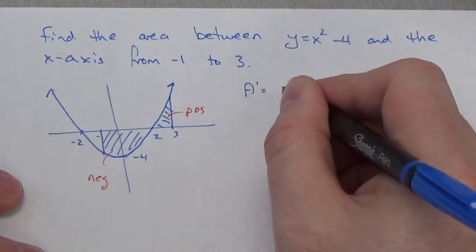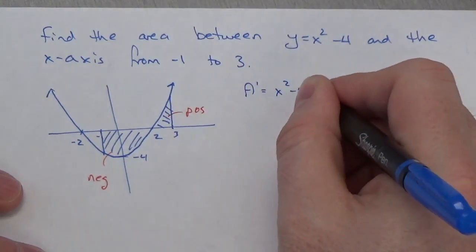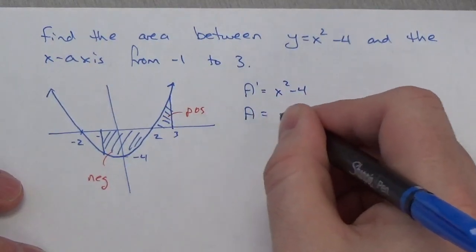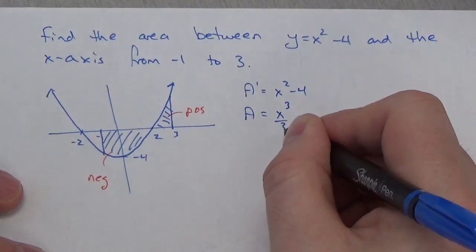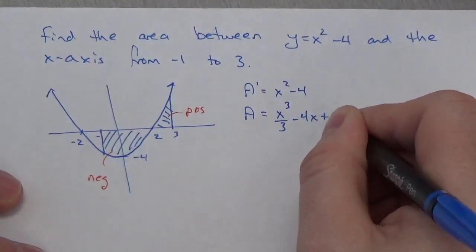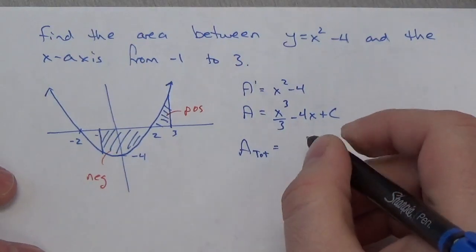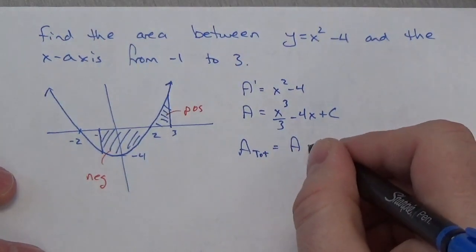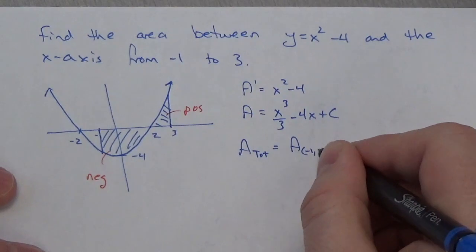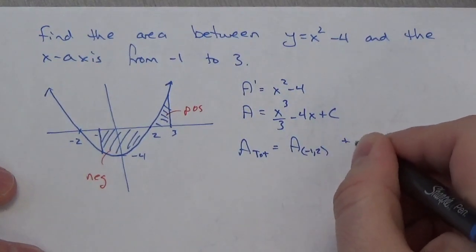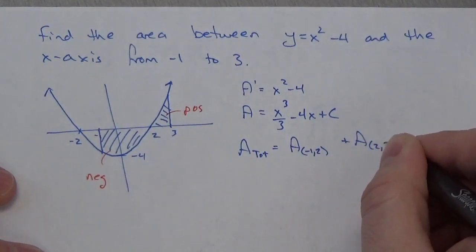So, the derivative of my area function is going to be x squared minus 4, which means my area function will be x cubed over 3 minus 4x plus c. And now, the area total that I want to find here is going to be the area from negative 1 to 2 plus the area from 2 to 3.